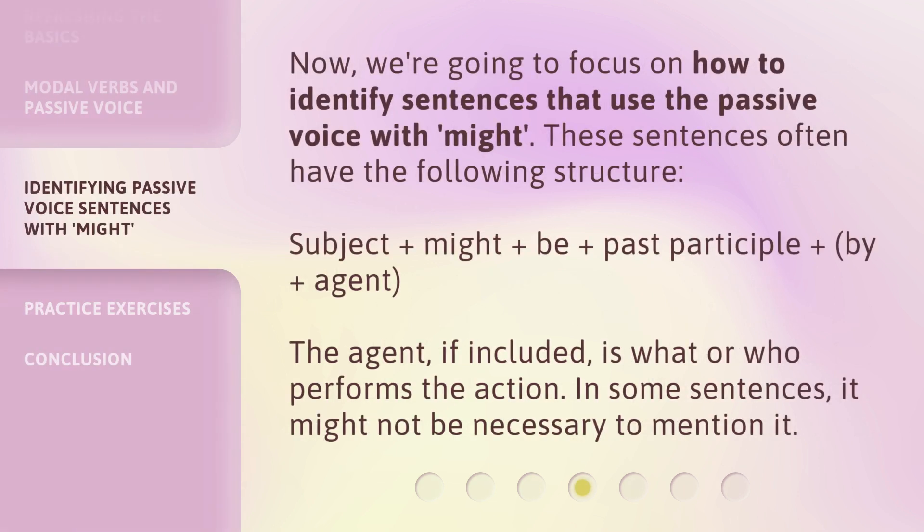Now, we're going to focus on how to identify sentences that use the passive voice with might. These sentences often have the following structure: might + be + past participle + by + agent. The agent, if included, is what or who performs the action. In some sentences, it might not be necessary to mention it.